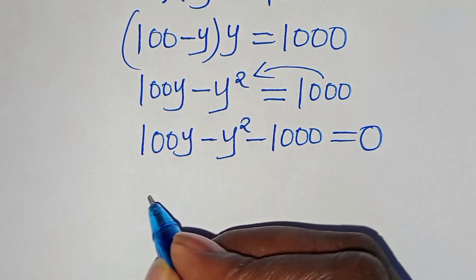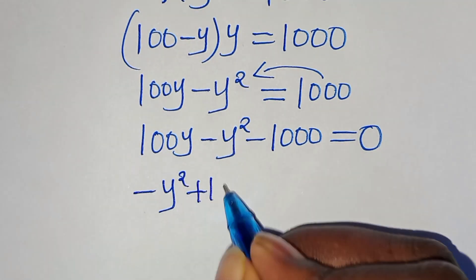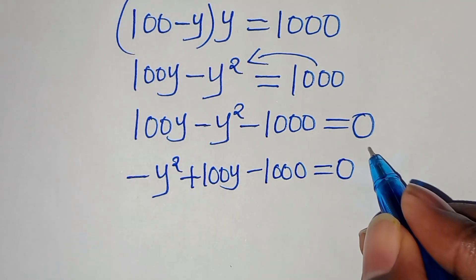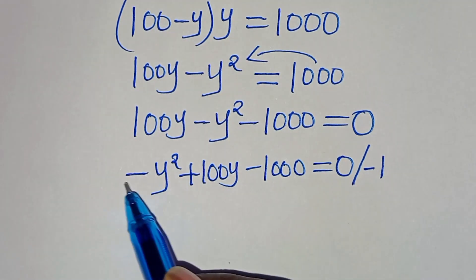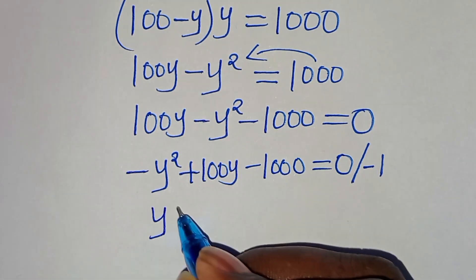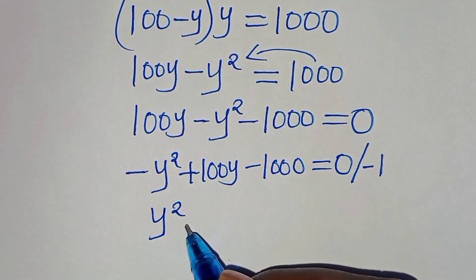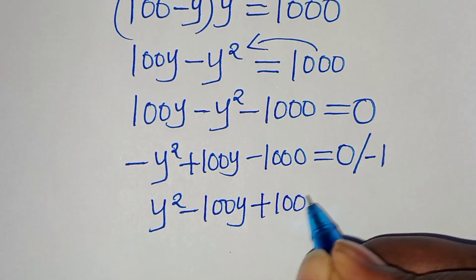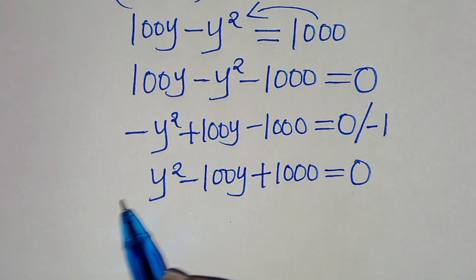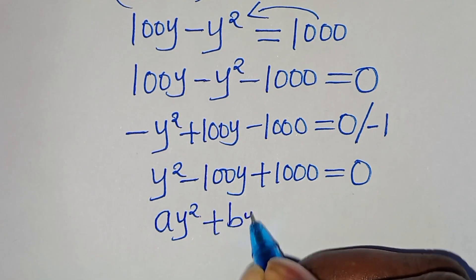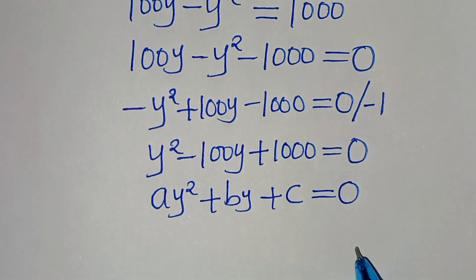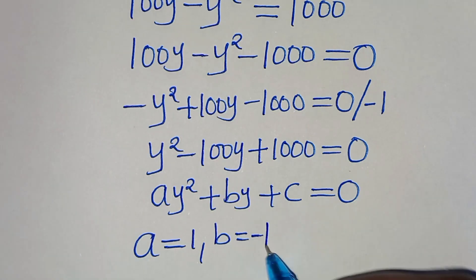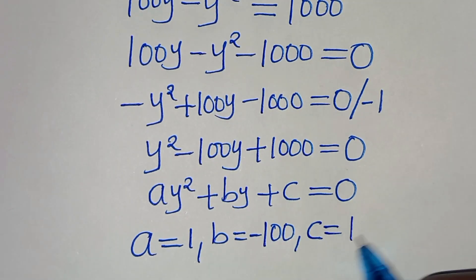Now let's rearrange this equation so that we have minus y squared plus 100y minus 1000 equals 0. The next step is to divide both sides by minus 1. So minus y squared divided by minus 1 is y squared, then plus 100y divided by minus 1 becomes minus 100y, then minus 1000 divided by minus 1 becomes plus 1000, this is equal to 0. This is the quadratic equation of the form ay squared plus by plus c equals 0. From this quadratic equation, we have a equals 1, b equals minus 100, and c equals 1000.